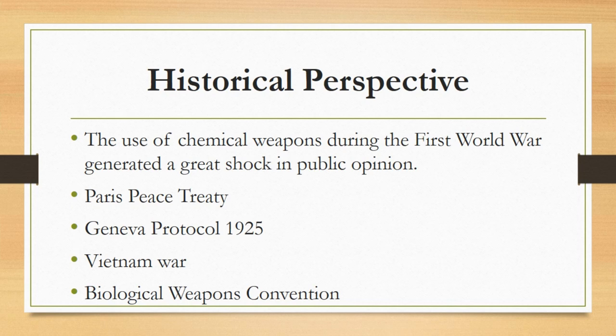After the Second World War, it was again the use of chemical weapons — namely the use of tear gas and herbicides by the United States in the Vietnam War — which triggered new attempts to strengthen their ban. The United Nations General Assembly adopted resolutions declaring the content of the Geneva Protocol to be part of customary international law, and at the same time inviting states to adhere to the protocol. A ban on possession of such weapons became part of the arms control negotiations conducted under the United Nations.